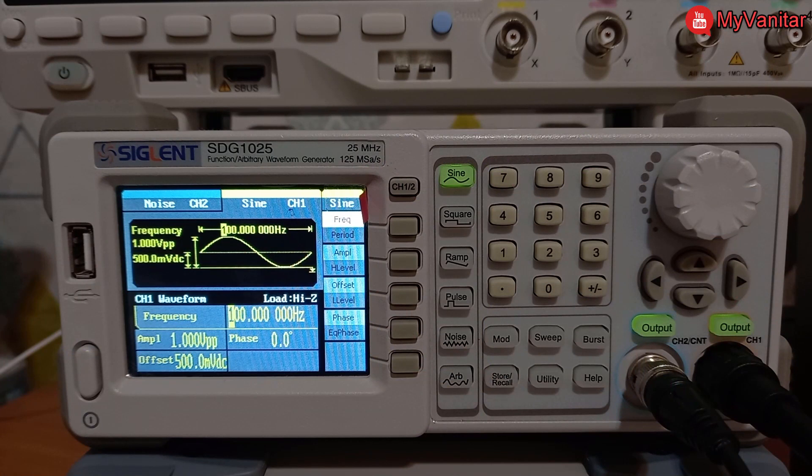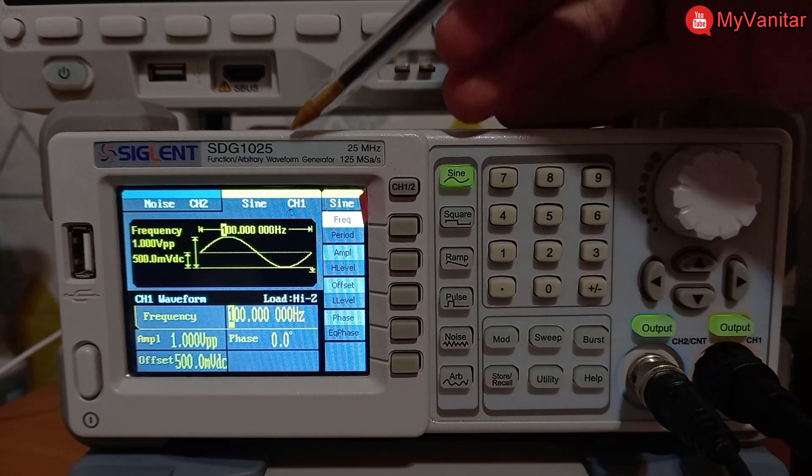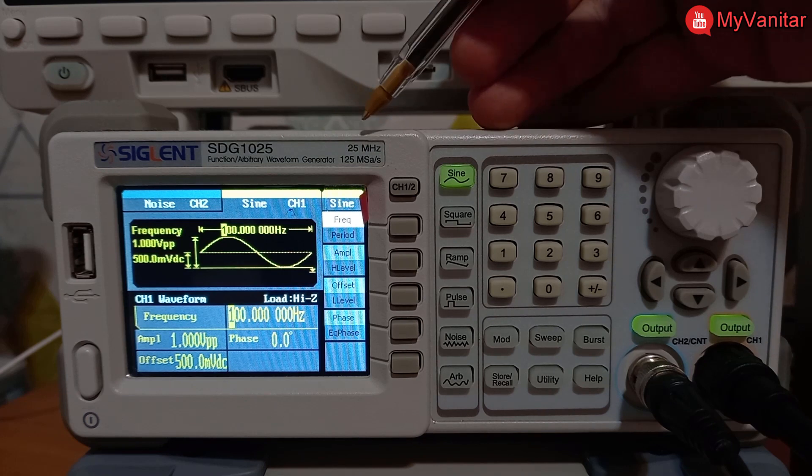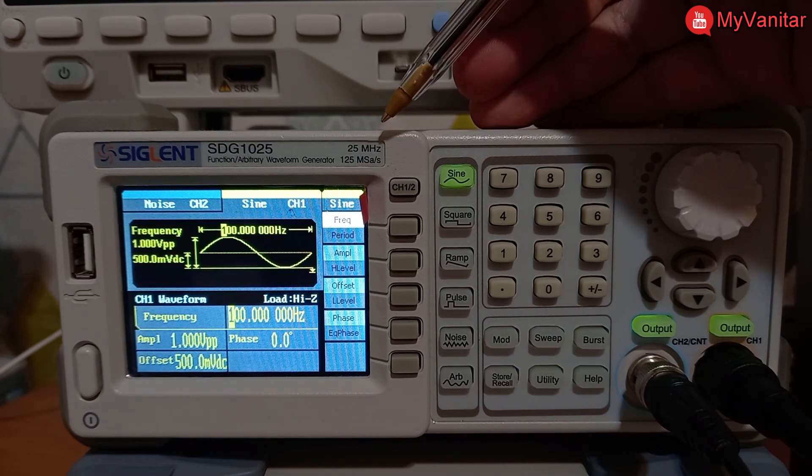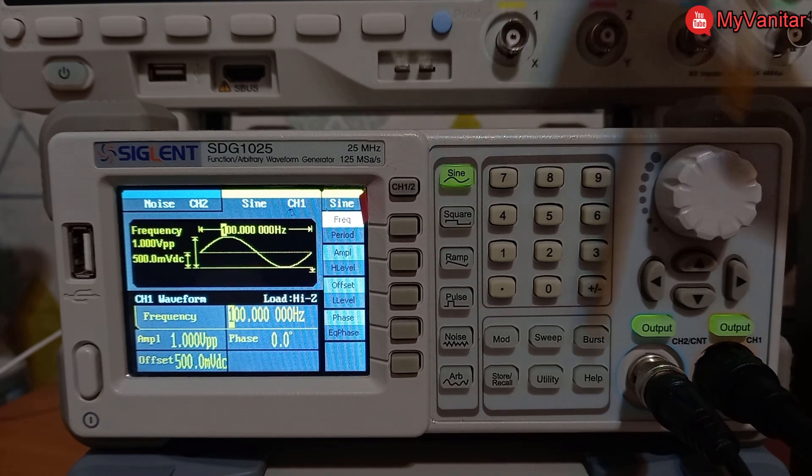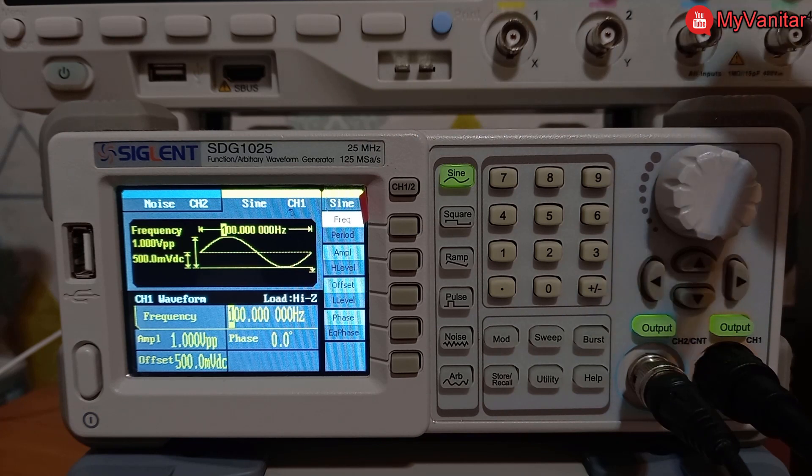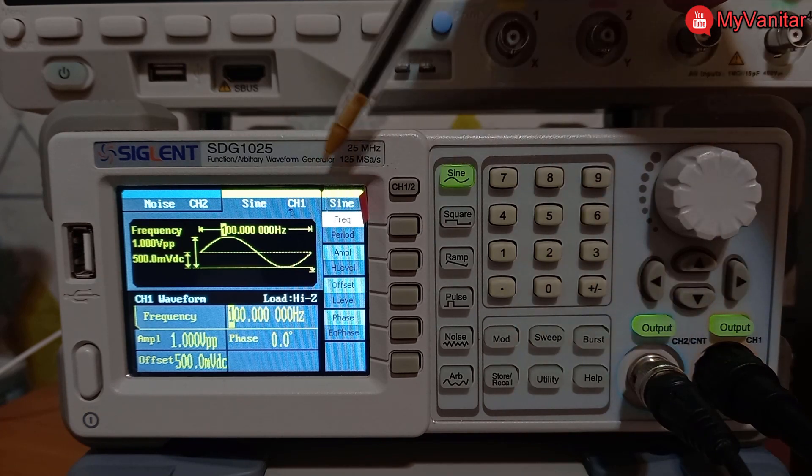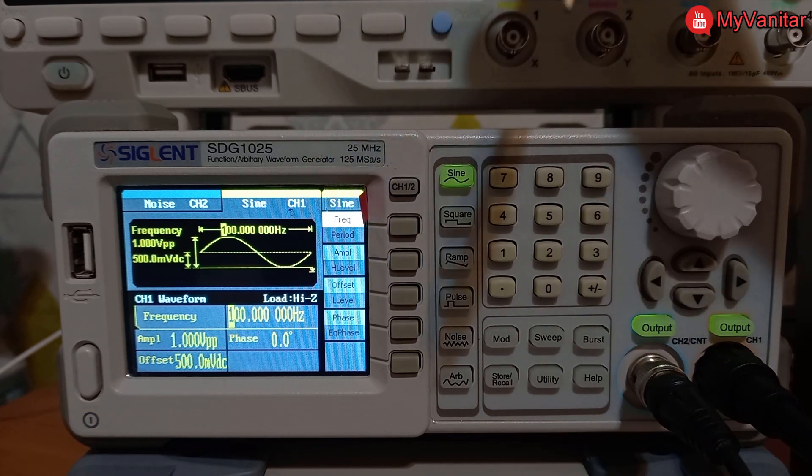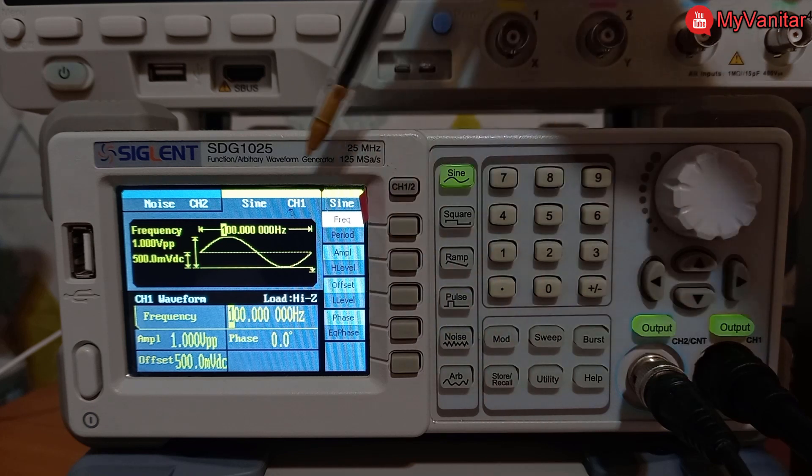All right, I moved the camera forward to be able to capture the waveform generator screen correctly. I used Siglent SDG1025, 25-megahertz waveform generator. I had to decrease the exposure of the camera because the waveform generator screen is bright; otherwise I cannot show you the screen correctly.